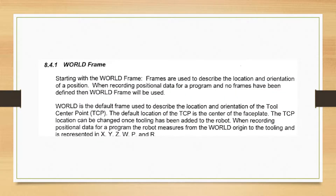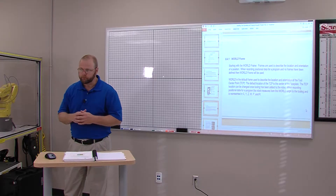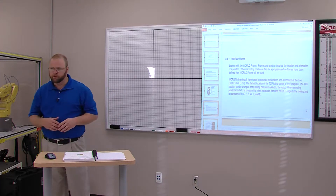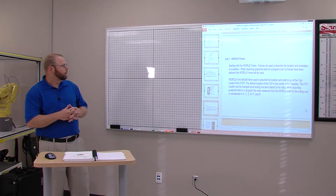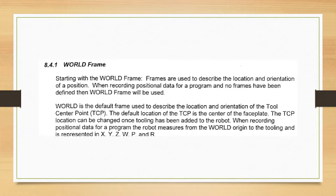The world frame is the default frame used to describe the location and orientation of the tool center point. The default location of the tool center point is on the face plate of the robot — a little black round piece on the end of the robot — and that is the default tool center point. It can be changed once tooling has been added to the robot. When recording positional data, the robot measures from the world origin to the tooling and represents it in X, Y, and Z, W, P, and R.